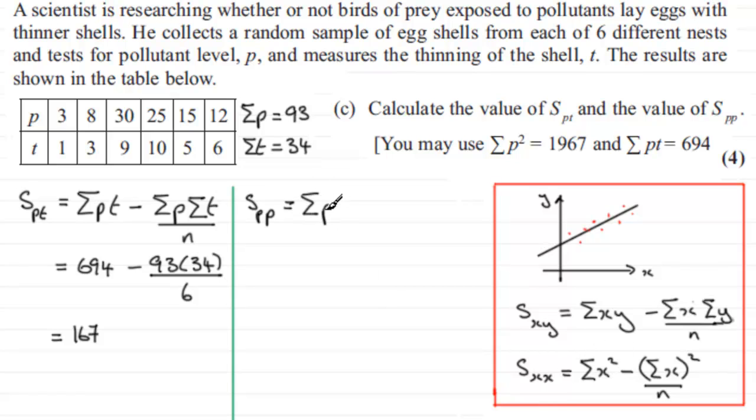And again, if we put our values through here: Sigma P squared is 1967, and then minus Sigma P, which we've got up here is 93, so we've got 93 all squared divided by n, n being 6. And if you work this one out, you end up with 525.5. All right, so that should give you some idea then if you were struggling with that.